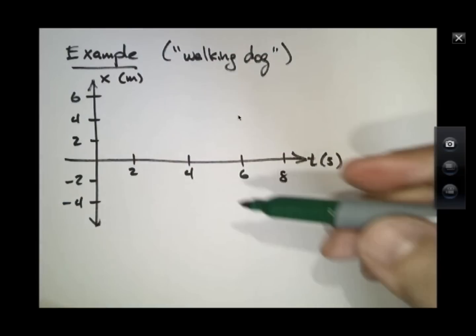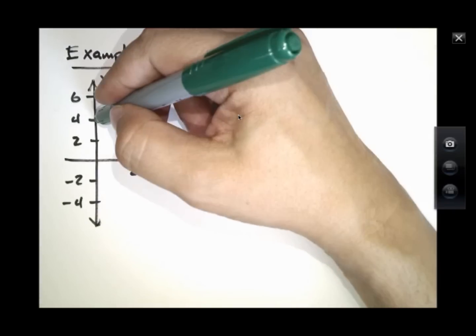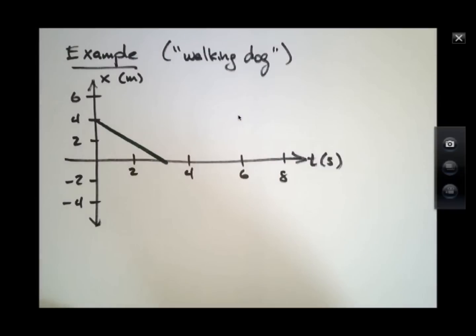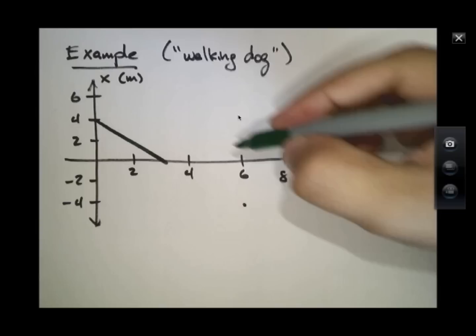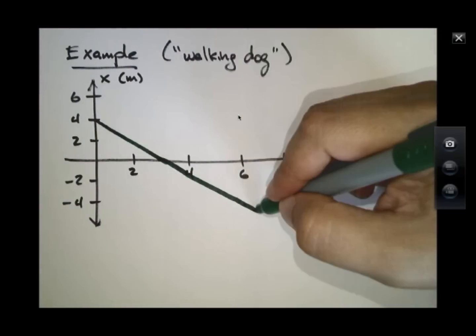And we'll say that our graph is such that the object started out here, headed to the origin, and if it keeps on going, keep going like so.